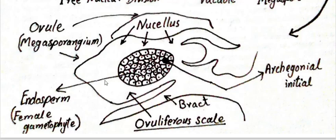In this endosperm or female gametophyte, toward the micropylar end of the ovule, several cells become enlarged in size and become prominent. They act as the archegonial initials. Next we will see how archegonia are produced in this female gametophyte and what is the structure of the archegonium.